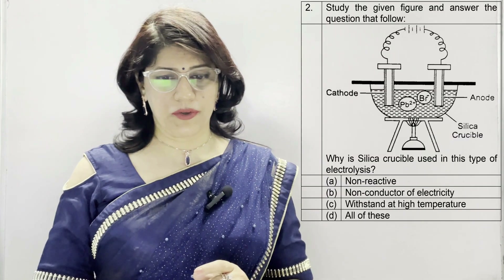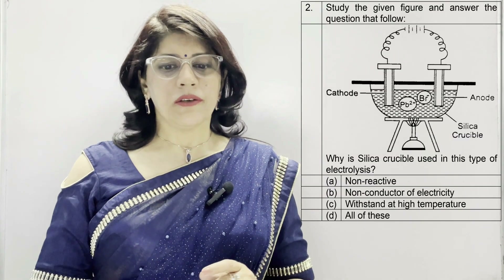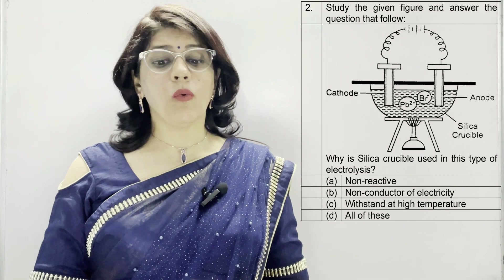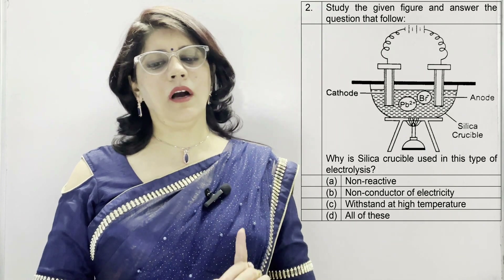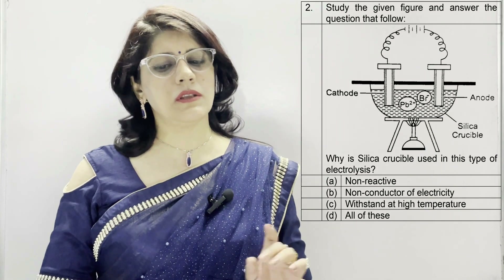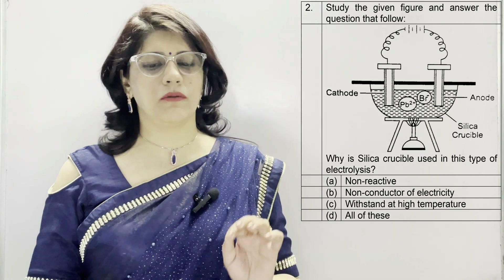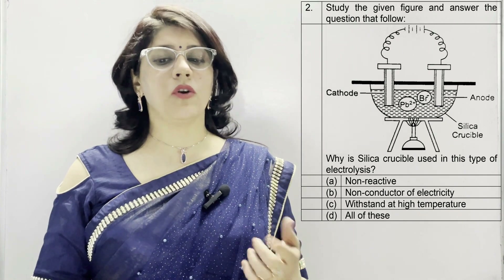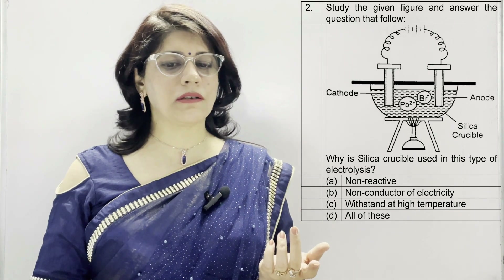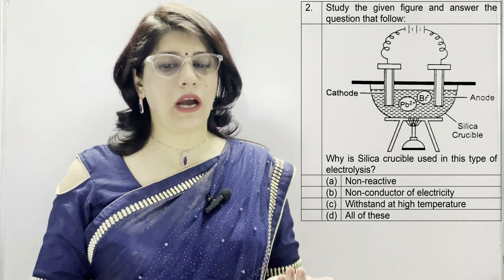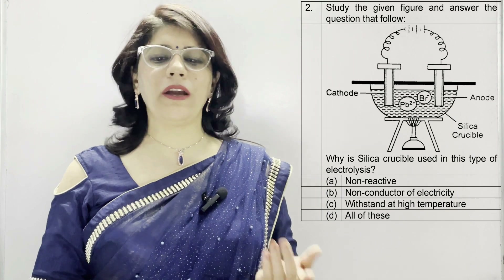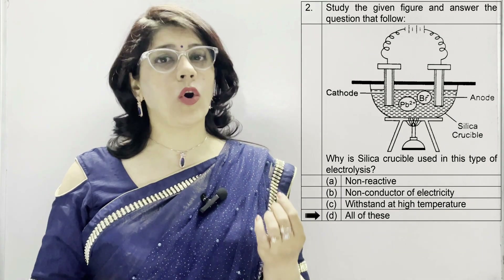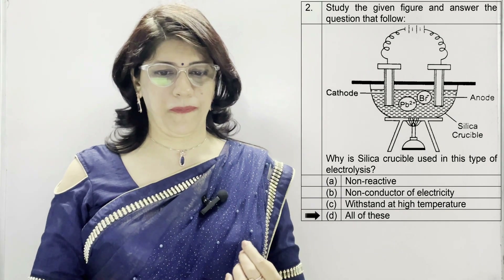Coming to the second question: study the given figure and answer the questions that follow. Why is a silica crucible used in this type of electrolysis? It is non-reactive, non-conductor of electricity, C — it can withstand high temperature, and D — all of these. The correct option is D: all of these.